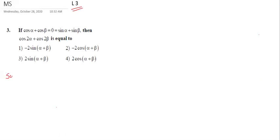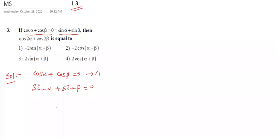So how to solve this problem? Students, tell me. Given: cos α + cos β = 0 and sin α + sin β = 0. Two equations are given. For these two equations, do squaring and subtracting — squaring and subtracting — then we get the answer.